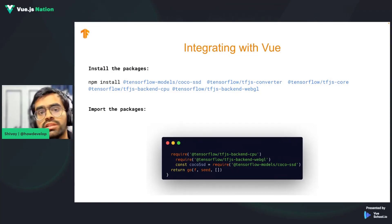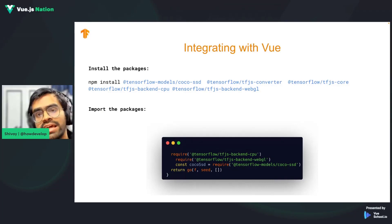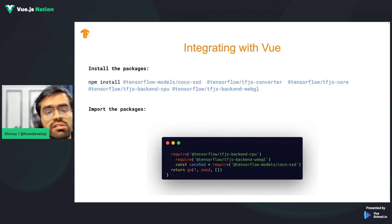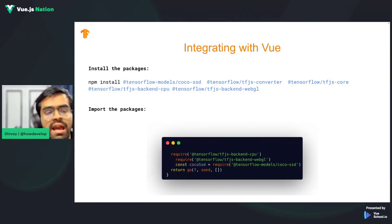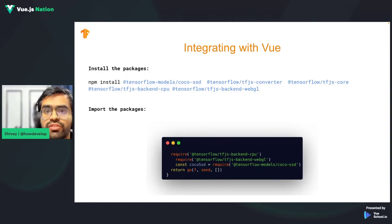To integrate machine learning models or TensorFlow.js with Vue, you first need to install the necessary packages. This includes the core TensorFlow.js package itself and then the corresponding machine learning model — in this case the COCO-SSD model. Once you install these packages, you import them inside your Vue component.